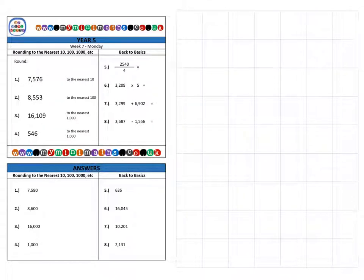And next, we're on to question three. Okay, which is 16,109. And we're going to be rounding it to the nearest 1,000. So, our first task is to identify the correct column. So, units, tens, hundreds, thousands and ten thousands this time.